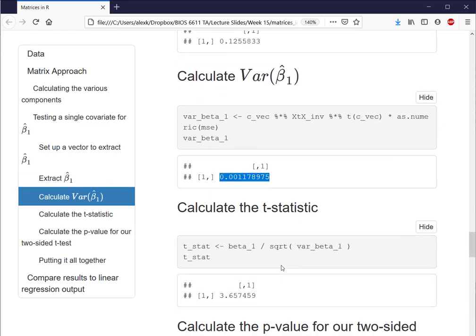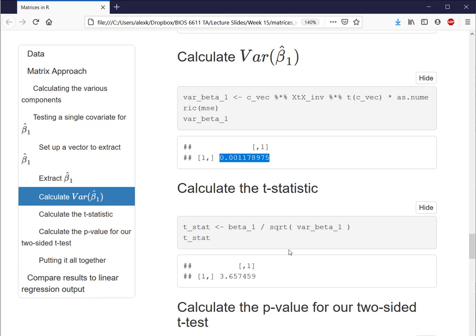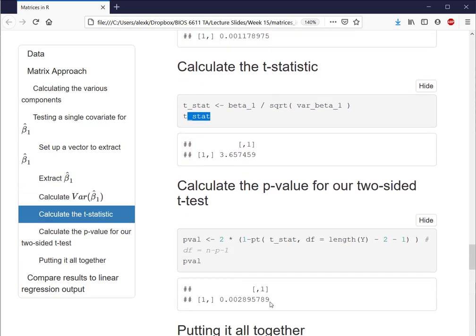And that's what we see here in the next step for calculating things like the T statistic and the P values, that we will take the square root of that variance estimate for our standard error, where we have from our matrix approach an estimate for the T statistic of 3.66.